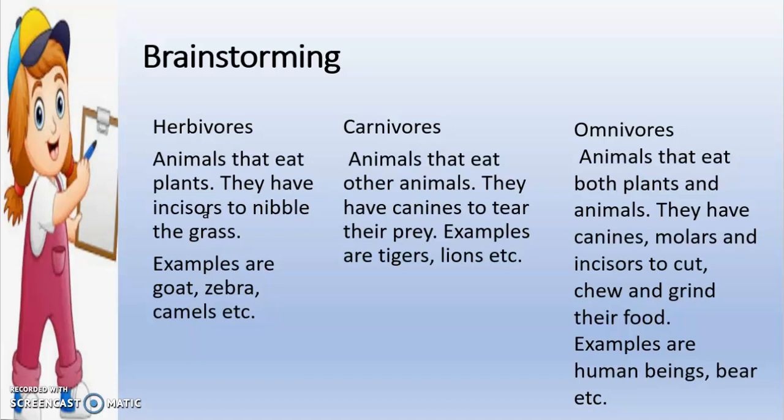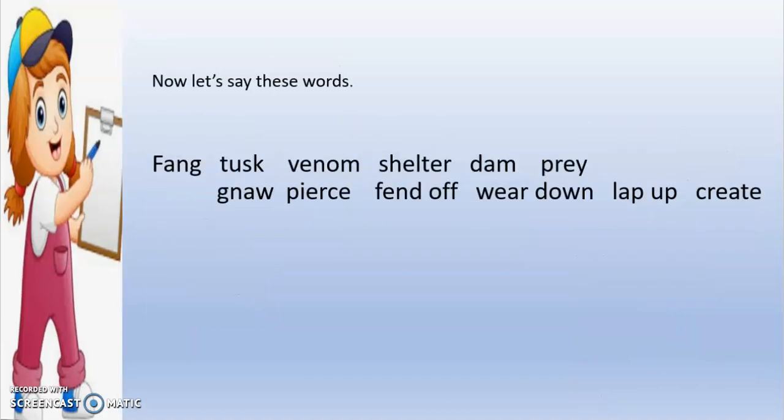Omnivores are animals that eat both plants and animals. They have canines, molars and incisors to cut, chew and grind their food. Some examples of omnivores are human beings, bear, etc.